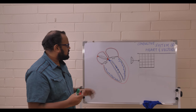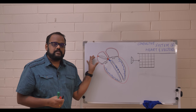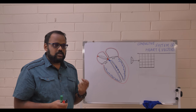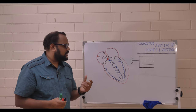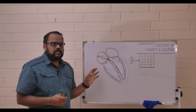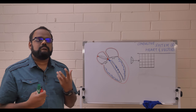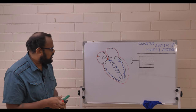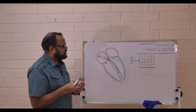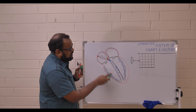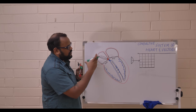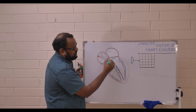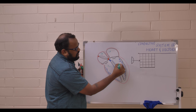We're going to talk about specialized cells which can produce impulses of their own. We call these pacemakers. The most important pacemaker of the heart is the sinoatrial node, or SA node. In this cross section you can see the right atrium, left atrium, right ventricle, and left ventricle.